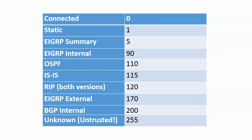Both versions of RIP have an AD of 120. EIGRP external routes have an AD of 170 — that is a route learned via route redistribution. BGP internal routes have an AD of 200 — you'll get some BGP in your CCNA studies. And if a route has an AD of 255, it is considered to be of unknown source and untrusted. You won't see an AD of 255 in your routing table, because if it's untrusted, it isn't going on your routing table.